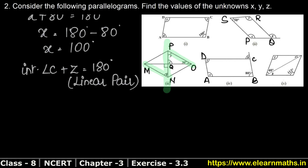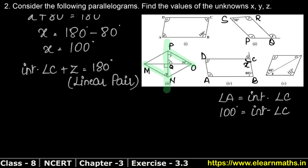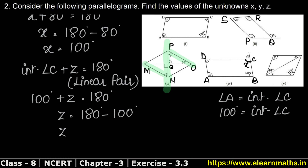Interior angle C equals 100 degrees. So interior angle C plus z equals 180 degrees, meaning z equals 180 minus 100, so z equals 80 degrees. That is the answer for part D.